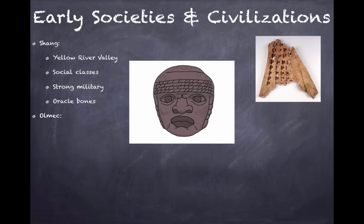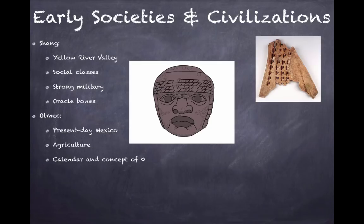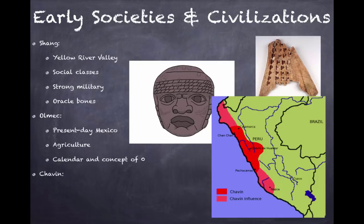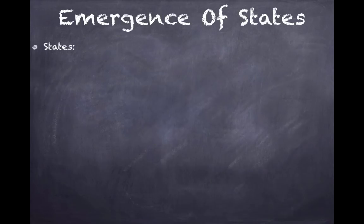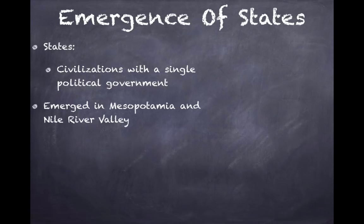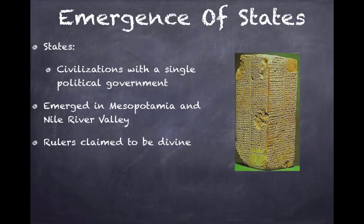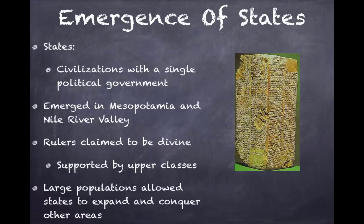The Olmec civilization in present-day Mexico focused on agriculture, developed a calendar and the concept of zero, and built enormous stone heads believed to depict their leaders. The Chavin along the Andes Mountains in South America also focused on agriculture, domesticated llamas, and had a very weak political structure. During this time, states — civilizations with a single political government — emerged in Mesopotamia and the Nile River Valley, where rulers claimed to be divine and were supported by the upper classes.